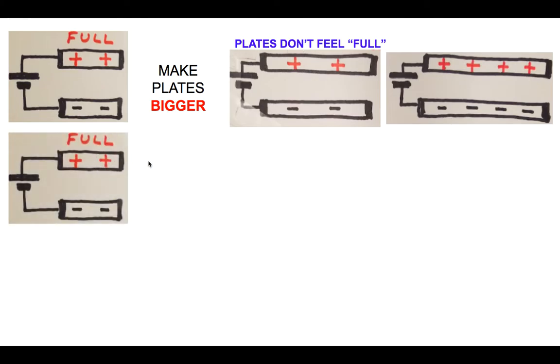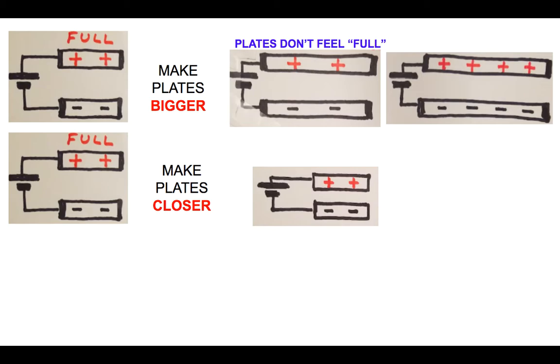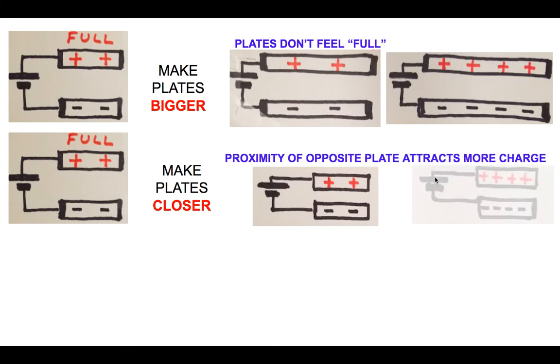Another thing: suppose we start with this full capacitor and we make those plates closer together. This one's interesting. In the first instance on the left, it felt full, but now you've made the plates closer together. This positively charged plate is now closer to the negatively charged plate. What that will do is entice more electrons to run from the battery over to the negatively charged plate. It kind of sucks them over. If you compare picture one and picture two, in picture two there's more incentive for more charge to go over to the plates. Another way to get more charge to go to the plates besides making them bigger: you can also make them closer together.